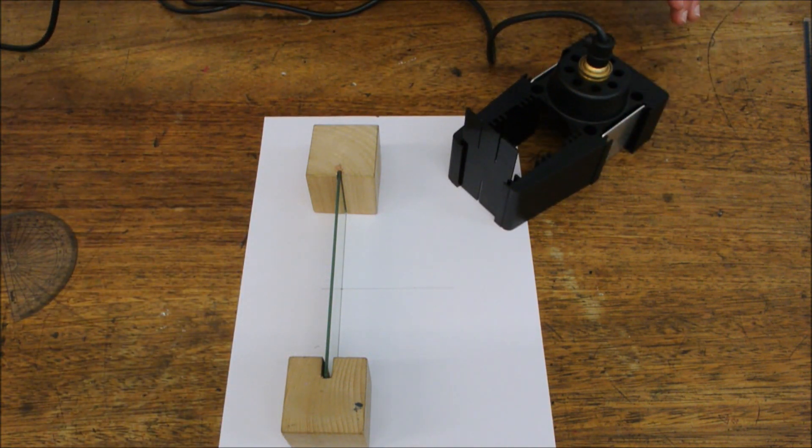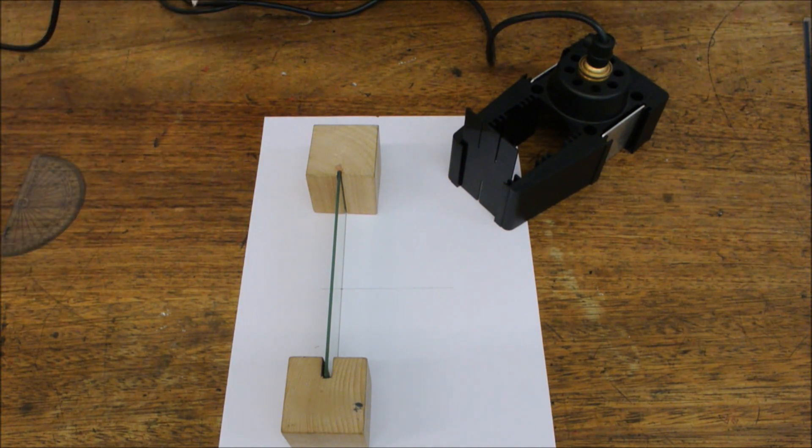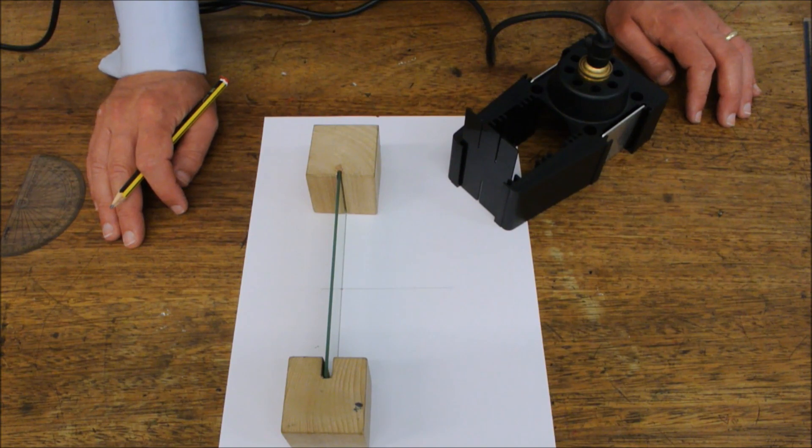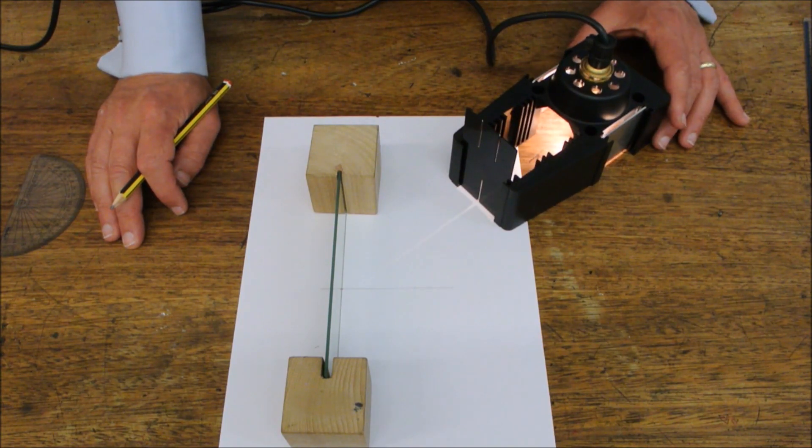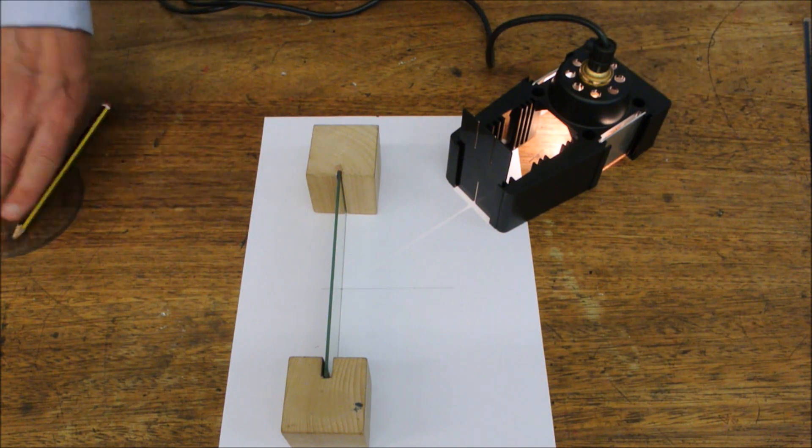Now we bring in the ray box and turn that on. And we want to position the ray so that it hits the central point where we've crossed the mirror with that normal line. And then we turn the light on.